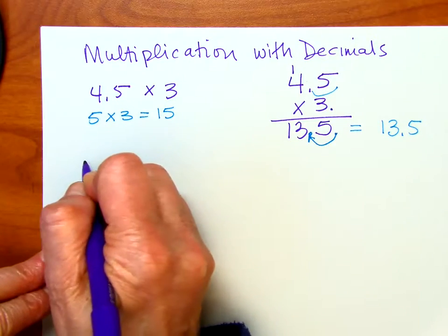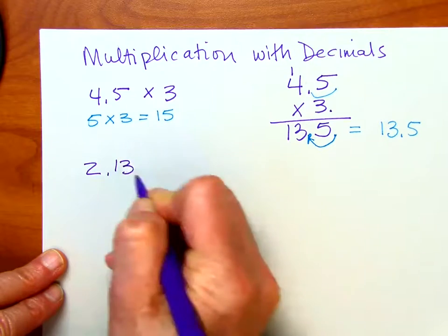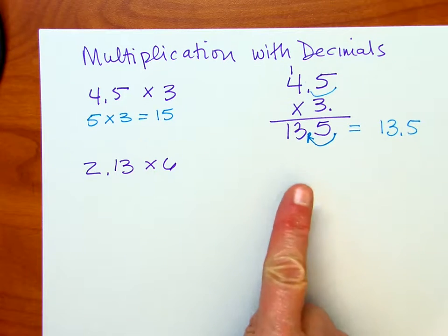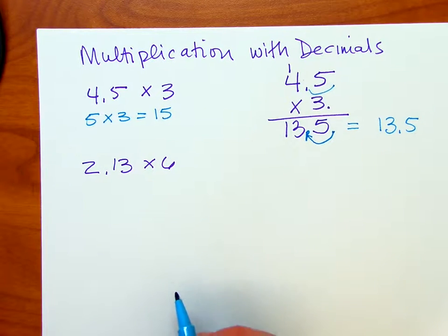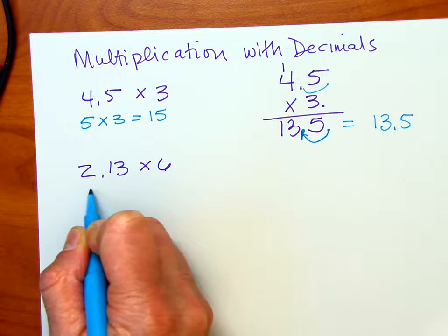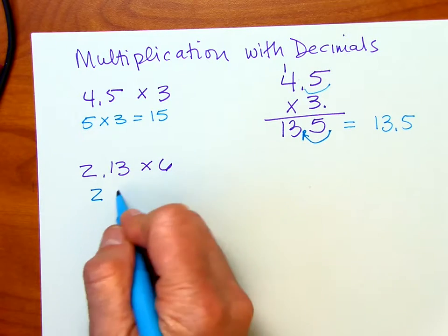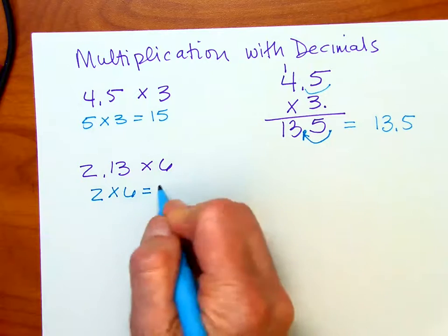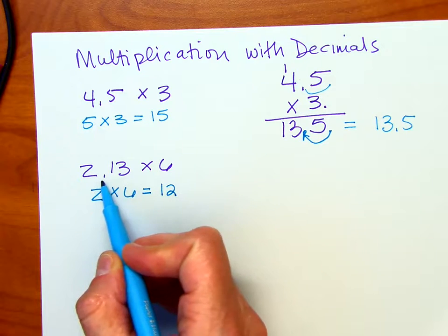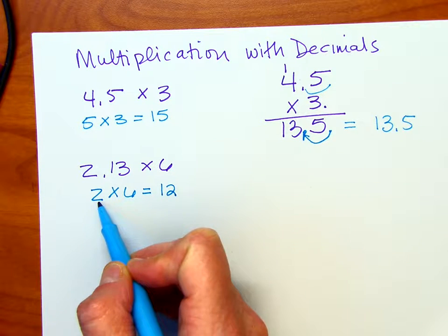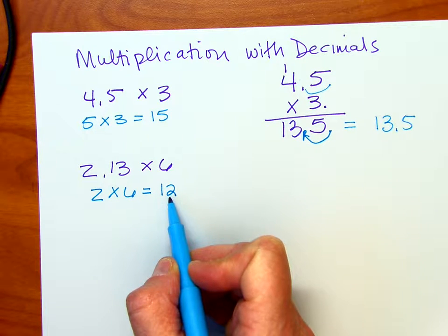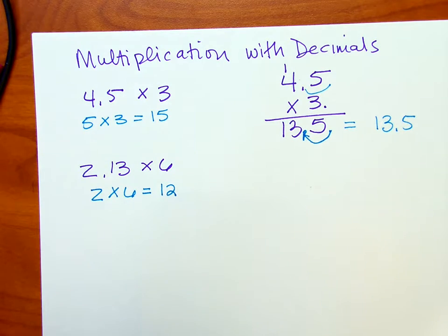Here we have 2.13 times 6. Now before I set it up vertically like I did the first one, I'm going to do a little estimating. If I round to the nearest whole number, this will become 2. And if I multiply 2 by 6, I'm going to get 12. Now notice this number, 2.13, is slightly bigger than the 2 that I rounded to. So I should expect that my answer would be slightly bigger than 12. Let's go ahead and do the math now.